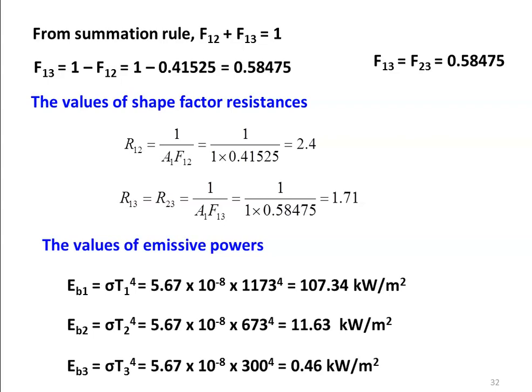The emissive powers: Eb1 equals sigma T1 to the power 4, which is 5.67 times 10 to the power minus 8 into 1173 to the power 4, equal to 107.34 kilowatts per meter square. Eb2 equals sigma T2 to the power 4, which is 5.67 times 10 to the power minus 8 into 673 to the power 4, equal to 11.63 kilowatts per meter square. Eb3 equals sigma T3 to the power 4, which is 5.67 times 10 to the power minus 8 into 300 to the power 4, equal to 0.46 kilowatts per meter square.